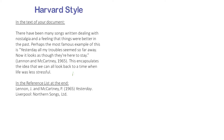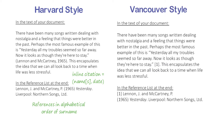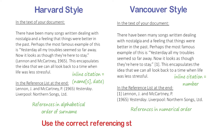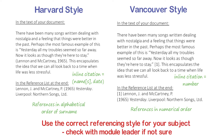There are many different referencing styles around. The main systems are Harvard and APA, which have name-date style inline citations and present the reference list in alphabetical order of surname. There are also numerical systems such as Vancouver, which use a number for the inline citation and then the reference list is in numerical order. You must use the referencing style required by your subject. Check with a module leader if you're not sure which one that is, and you must use that style consistently throughout your assignment.